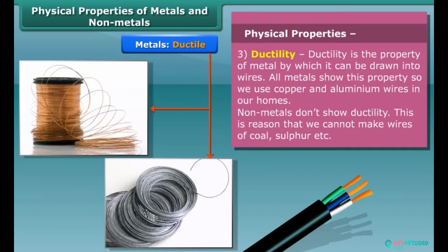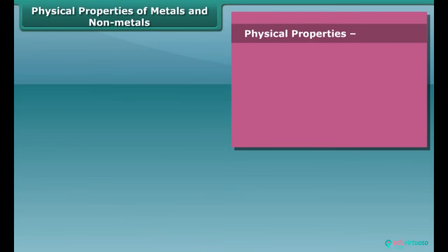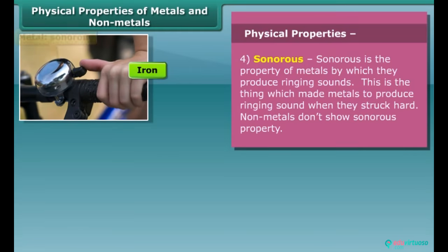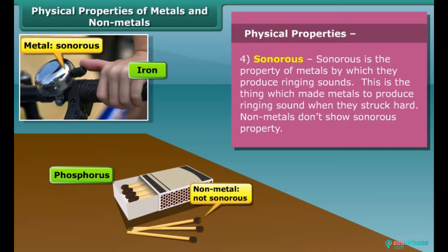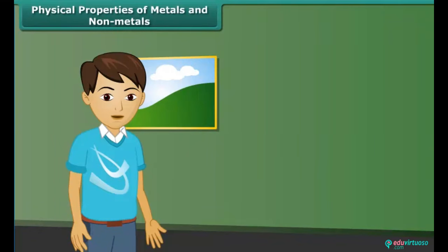Now let's talk about another property of metals — that is sonorous. Metals produce ringing sounds when struck, so they are said to be sonorous. Materials other than metals are not sonorous.